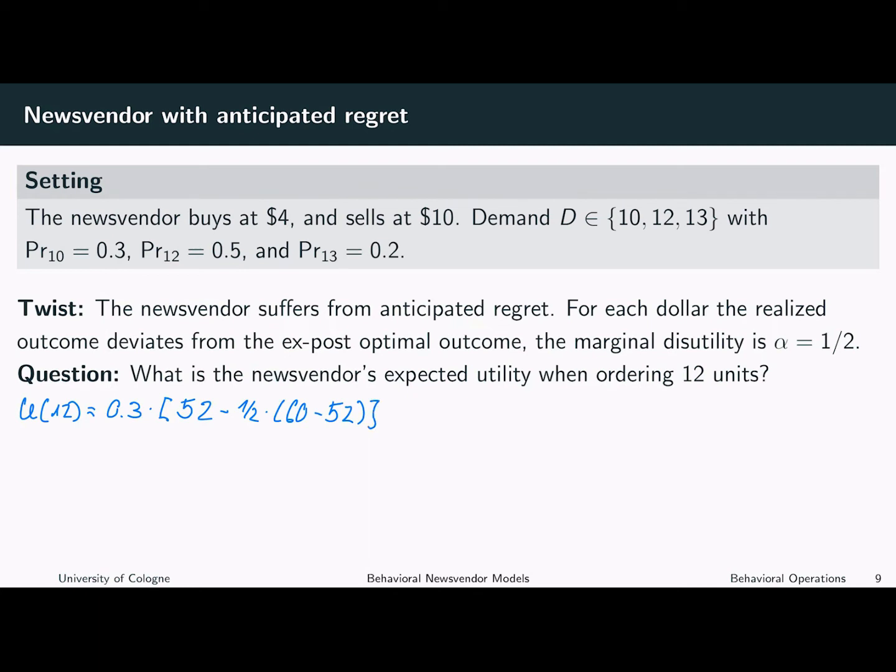With probability 0.5, the newsvendor sells 12 units. As we know from before, the profit when ordering and selling 12 units is given by 72. In this case, the realized profit is equal to the ex-post optimal profit.